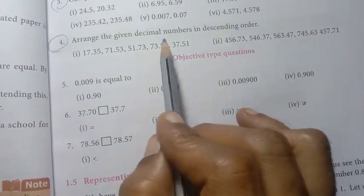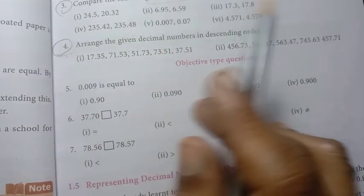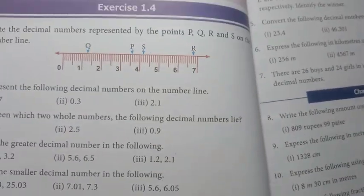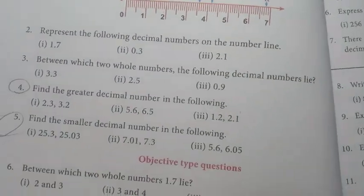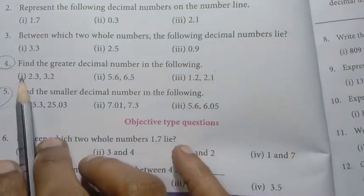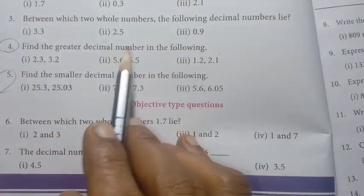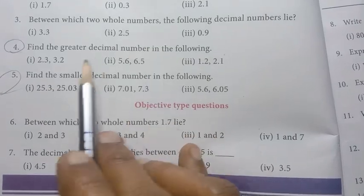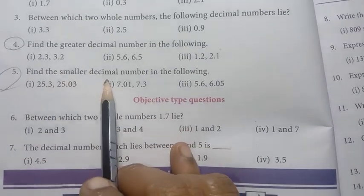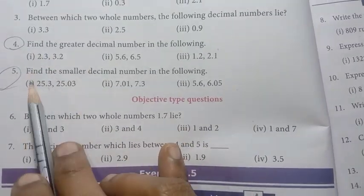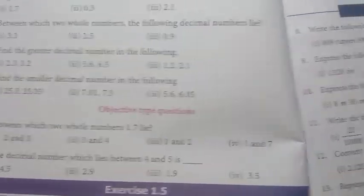Arrange the decimal numbers in descending order — this is important. Page number 18, Exercise 1.4, 4th and 5th one important: find the greater decimal number in the following, and the smaller decimal number — both are important questions.